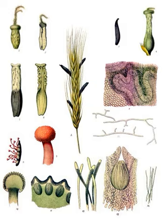When a mature sclerotium drops to the ground, the fungus remains dormant until proper conditions — such as the onset of spring or a rain period — trigger its fruiting phase. It germinates, forming one or several fruiting bodies with heads and stipes, variously colored, resembling a tiny mushroom. In the head, thread-like sexual spores form, which are ejected simultaneously when suitable grass hosts are flowering.